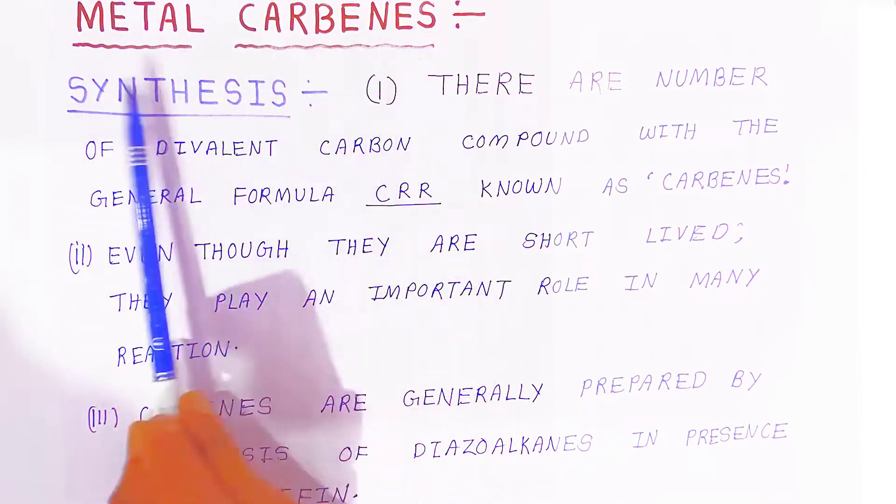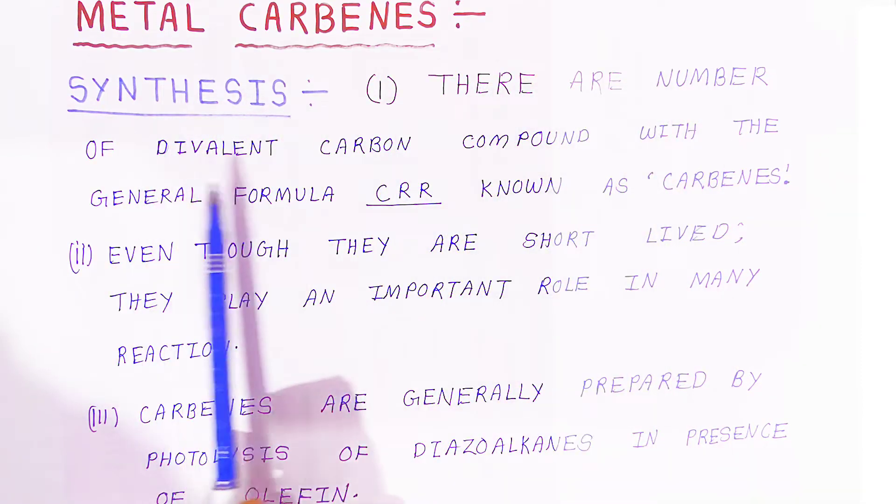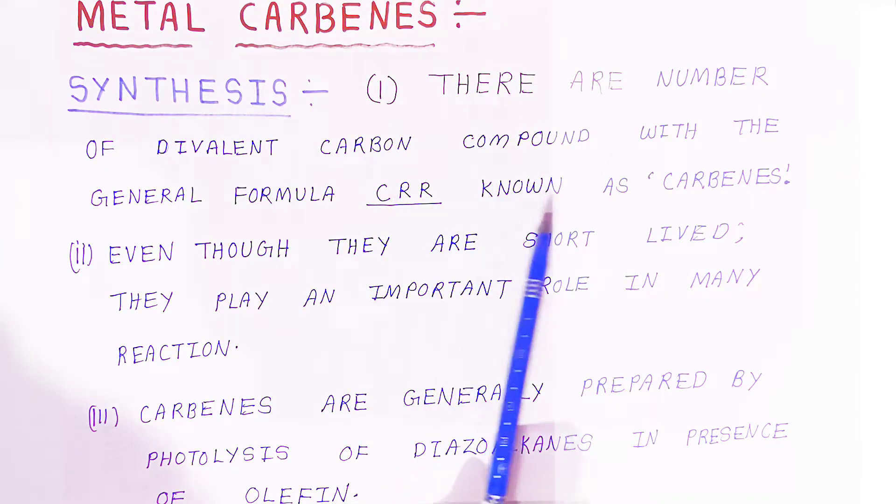How are you going to prepare metal carbenes? That is called synthesis. There are a number of divalent carbon compounds with the general formula CRR known as carbenes.